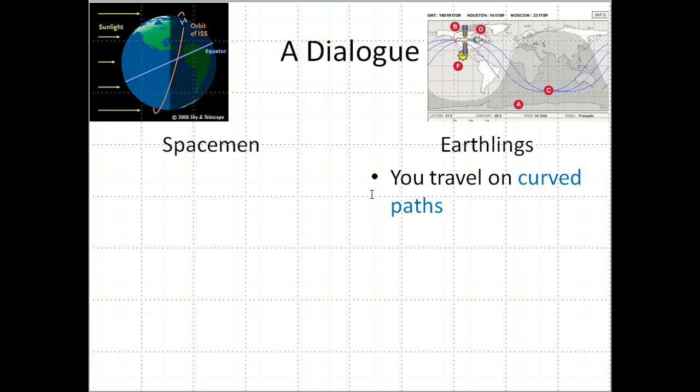But the spacemen persist and say, I think we're traveling on straight lines, just a modified version of straight lines in maybe a new kind of geometry.